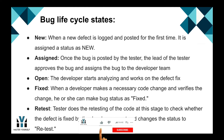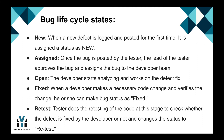First is New. When a new defect is logged and posted for the first time, it is assigned a status as New. Second is Assigned. Once the bug is posted by the tester, the lead of the tester approves the bug and assigns the bug to the development team.